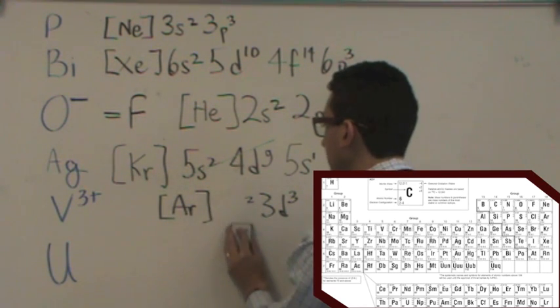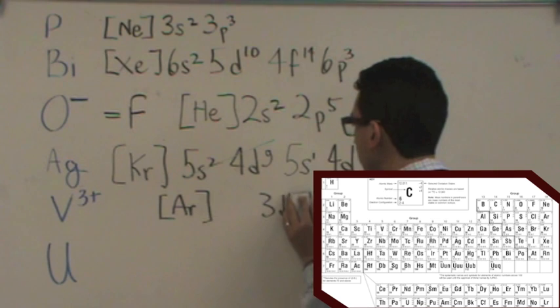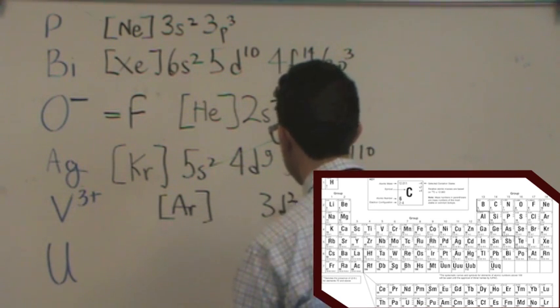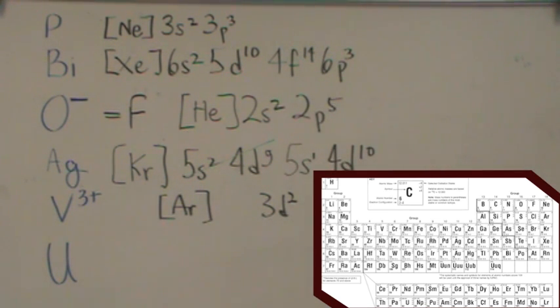So I'd have to remove both of these two and then one more from the D's. So my actual answer would be argon 3D2. I remove the S's and then I start removing the D's. All right, now let's head over to uranium.